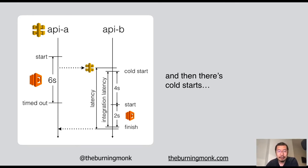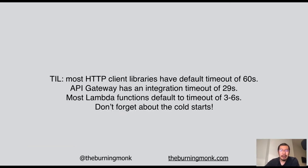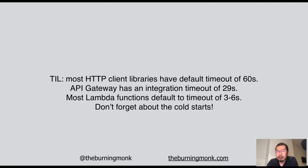It turns out in this particular case we have a mismatch of timeouts. Most of my functions have a default of three or six seconds timeout — that's what SAM or the Serverless Framework defaults to. API Gateway itself has a hard timeout of 29 seconds, but most HTTP client libraries are not designed for these kinds of serverless environments and they default to a timeout of 60 seconds. So our function timed out long before the HTTP request itself.